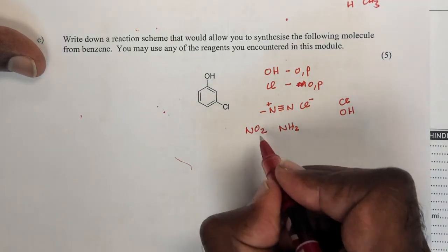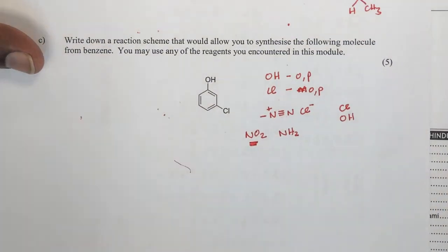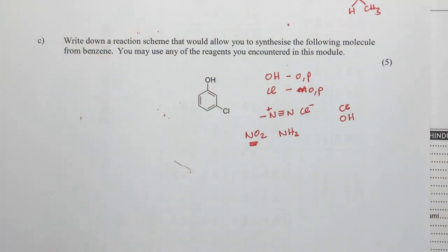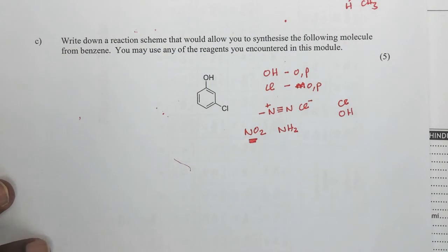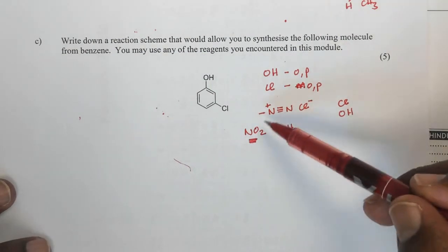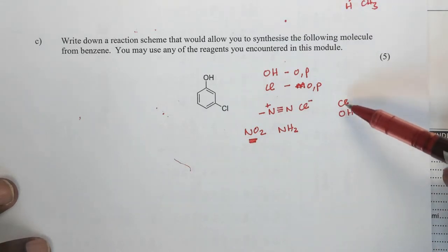I would say that this nitro-group is key in the synthesis, because that will be used to direct another group onto this aromatic ring. So, I can convert it to the diazonium salt and make both of these, but which would I choose to convert first?